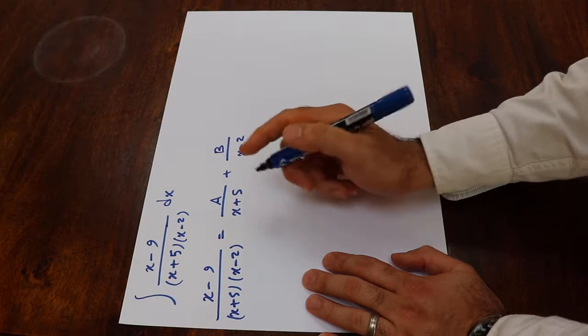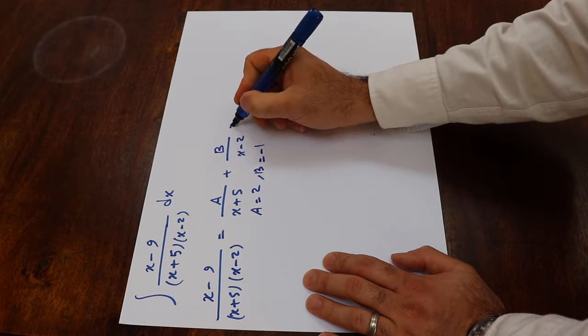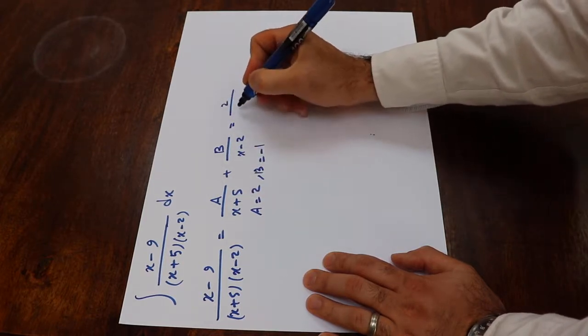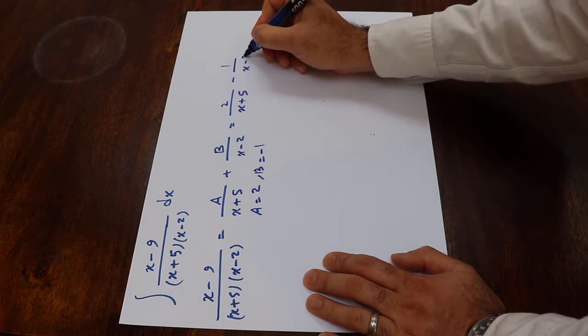So if you do the algebra, you get a will be equal to 2 and b will be equal to minus 1. Therefore, this one will be equal to 2 divided by x plus 5 minus 1 divided by x minus 2.